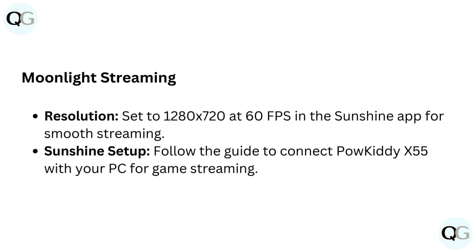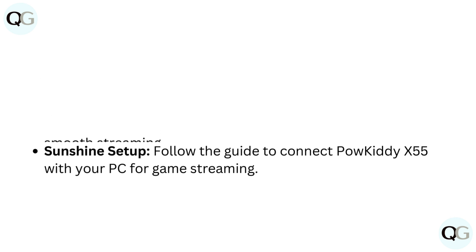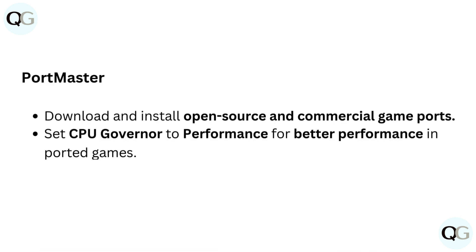For Moonlight streaming, set resolution to 1280 by 720 at 60fps in the Sunshine app for smooth streaming. For Sunshine setup, follow the guide to connect your Powkiddy X55 with your PC for game streaming.